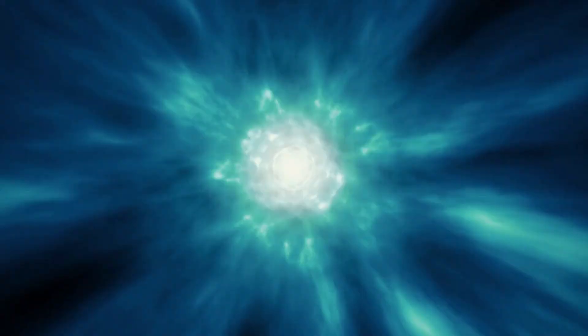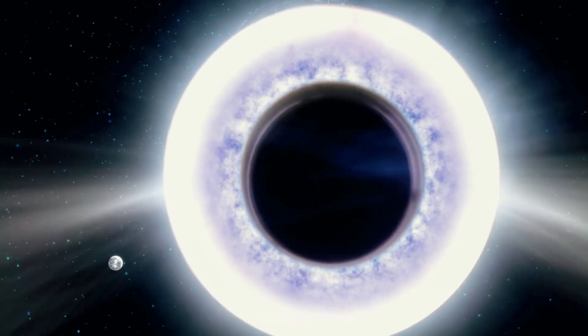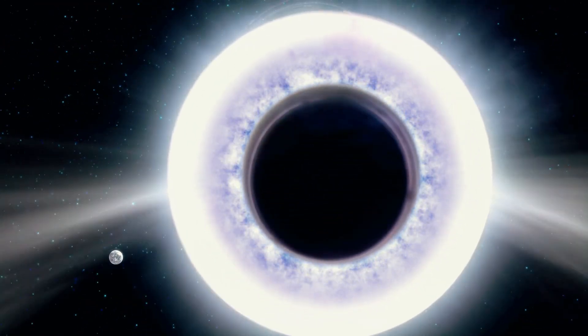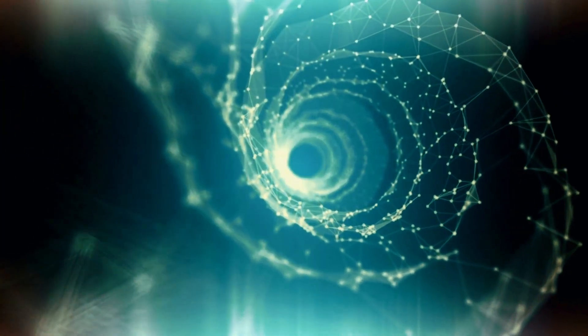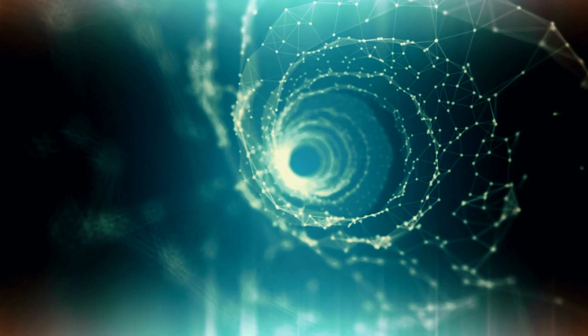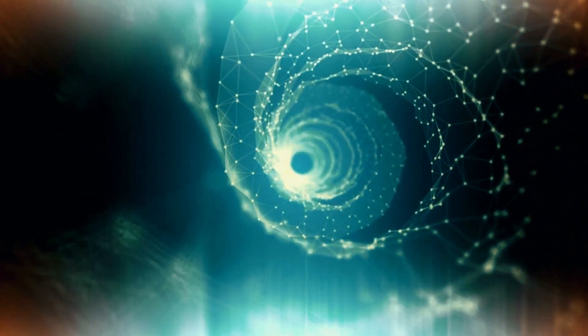Theoretical models offer fascinating insights into how black holes might function as portals to other universes. One of the most intriguing concepts is the wormhole, a theoretical tunnel-like structure that could connect distant points in space or even different universes. According to the Einstein-Rosen bridge model, black holes might be linked to white holes, creating a sort of cosmic bridge between two separate realms. This model proposes that a black hole could act as an entrance while a white hole serves as an exit, allowing for travel between universes.